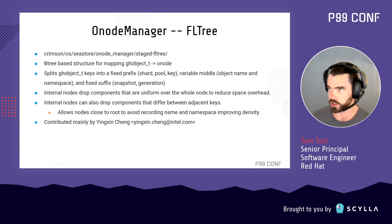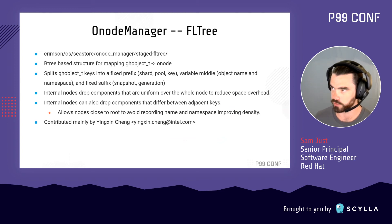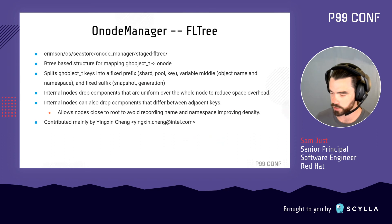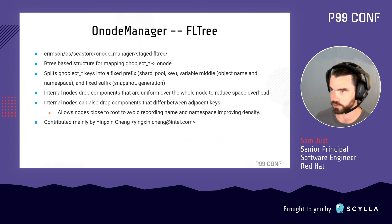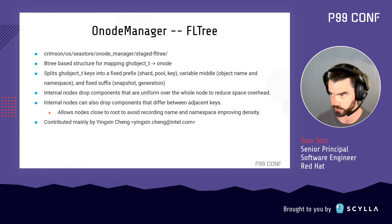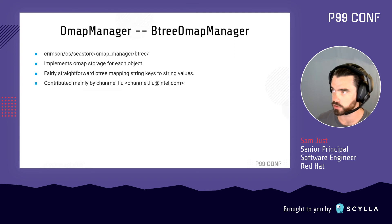The first major metadata structure is the onode manager. The internal object identifier is a seven-field tuple comprised of a shard number, a pool ID, a 32-bit numerical key corresponding to the crush ID, two variable-length fields under the control of the client — the object name and the namespace — and a fixed suffix comprised of the snapshot and generation ID. The FL tree is essentially a B-tree with some optimizations tailored to this layout, which allow internal nodes to drop components that are uniform over the whole node to reduce space overhead, and also to drop suffix components that differ between adjacent keys.